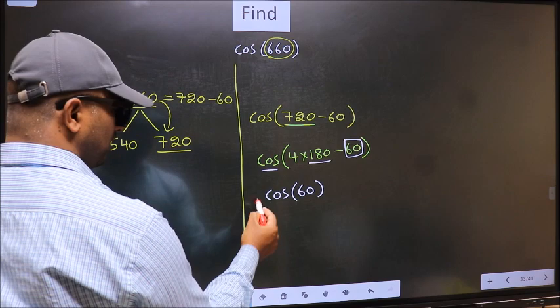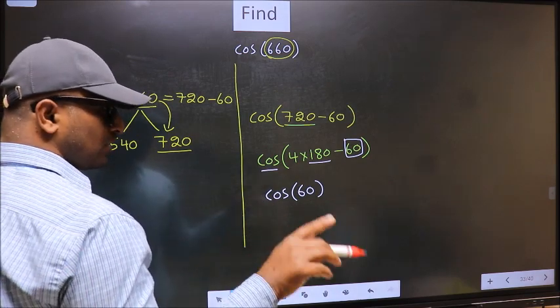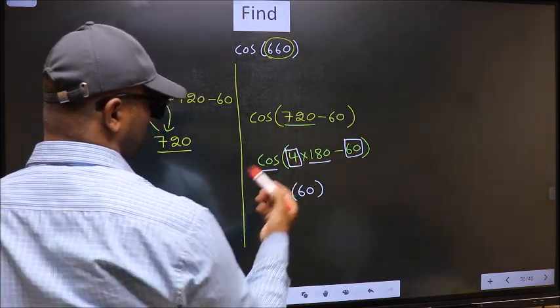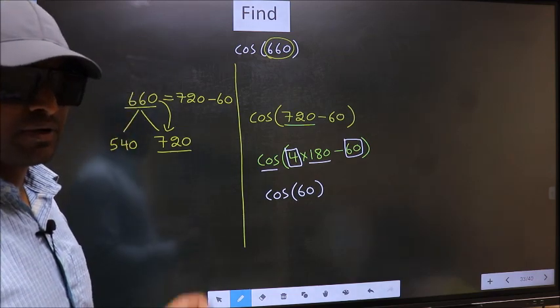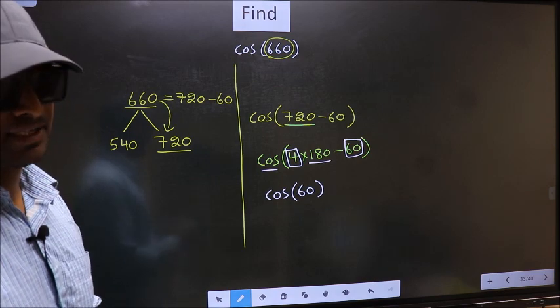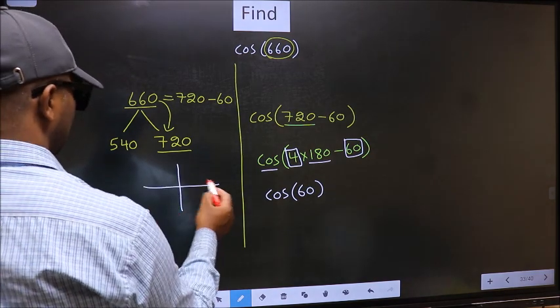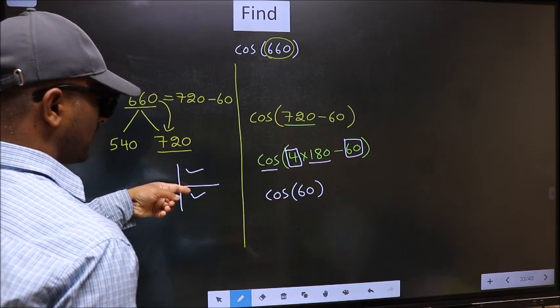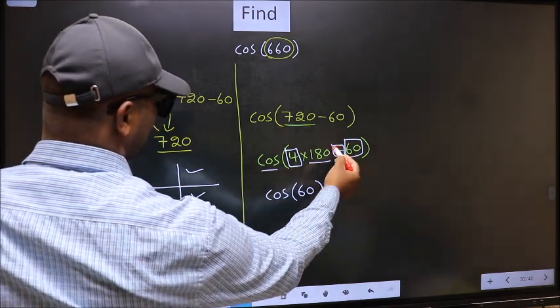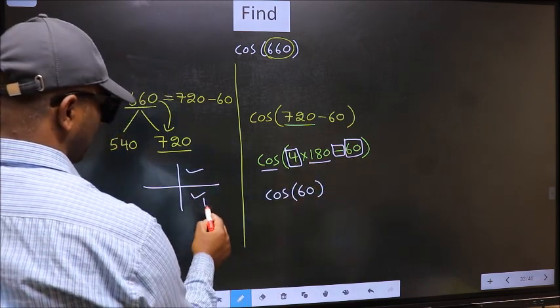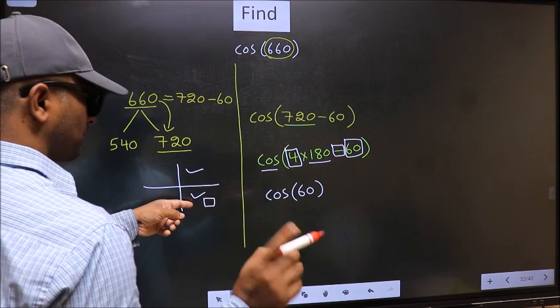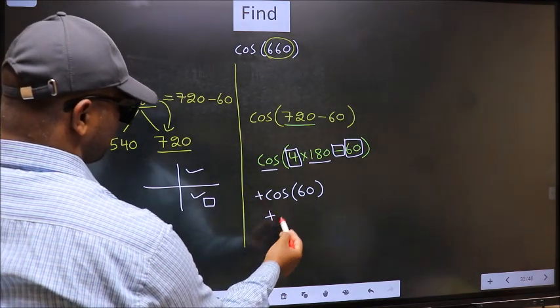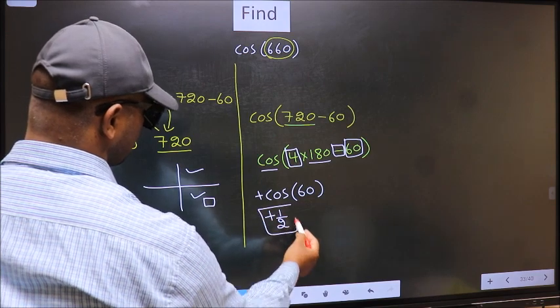Now the question is, will we get here plus or minus? To answer that, we should look at the number before 180. That is 4, and 4 is even. And all the even multiples of 180 lie either in the first or in the fourth quadrant. So now to select the quadrant, we should look at this symbol. Here we have negative, that means the angle lies in the fourth quadrant. And in the fourth quadrant, cos is positive. So we should put plus. So plus cos 60 is 1 by 2. This is our answer.